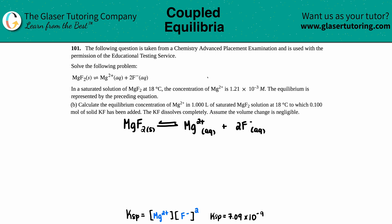Number 101. The following question is taken from a Chemistry Advanced Placement examination and is used with the permission of the Educational Testing Service. Solve the following problem. They give us this balanced equation. In a saturated solution of MgF2 at 18 degrees Celsius, the concentration of Mg2+ was 1.21 times 10 to the negative third molarity. The equilibrium is represented by the preceding equation.